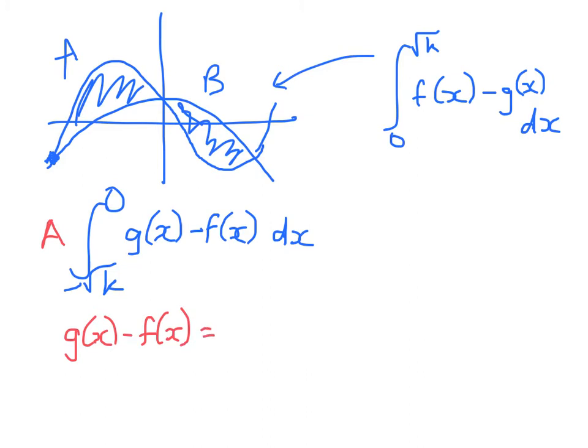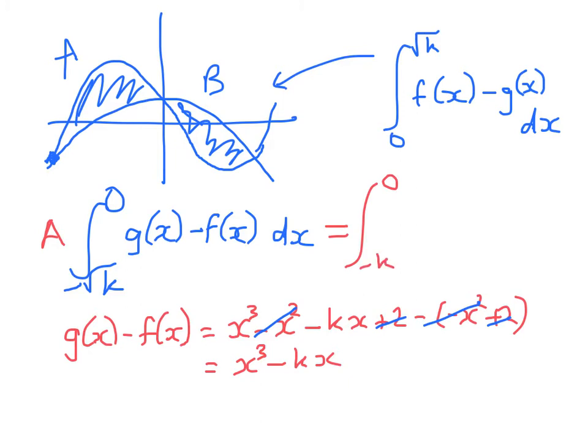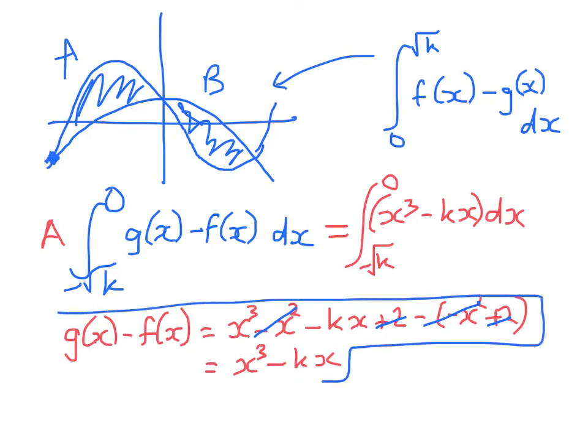What's g(x) - f(x) for area A? g(x) was the cubic, so x³ - x² - kx + 2 minus (-x² + 2). Simplifying before you start scribbling down your integral, that equals x³ minus kx. Now we're ready to integrate from -√k to 0 of x³ - kx dx. Go ahead and work that out now.